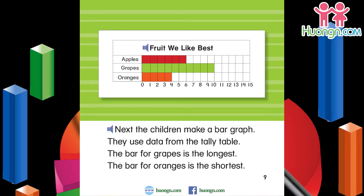Next, the children make a bar graph. They use data from the tally table. The bar for grapes is the longest. The bar for oranges is the shortest.